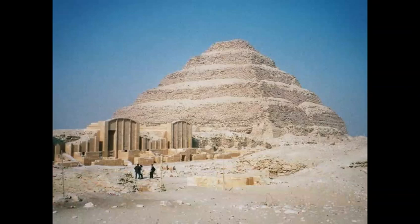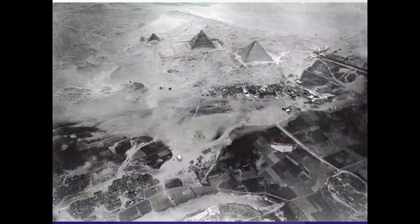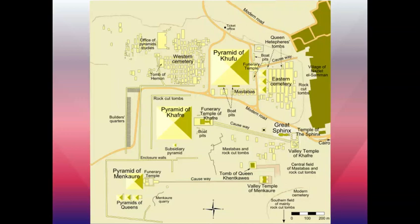Early pyramids were more of a stair-step design, not smooth, but over time they evolved into the smooth-sided pyramids we recognize today. The pyramids used to be covered in white stone and were very beautiful, but people have come and looted the stone over time. The biggest pyramids near Giza are known for Khufu, Khafre, and Menkaure, with smaller ones for queens and earlier pharaohs. This is also where we get the Great Sphinx — all the things we think of when we think of Egypt.